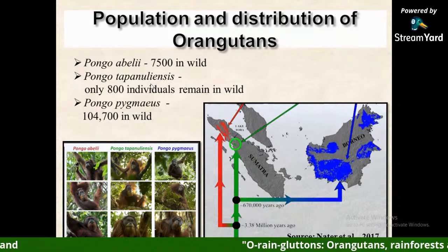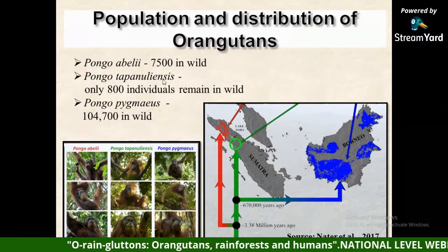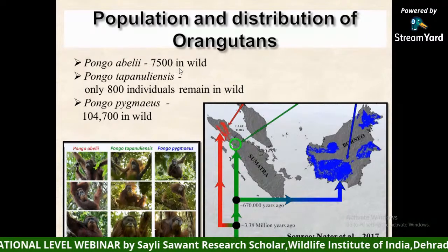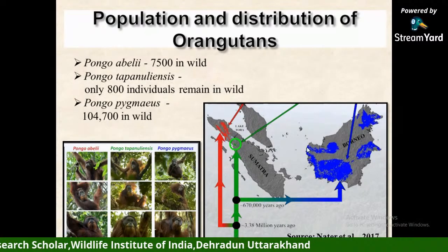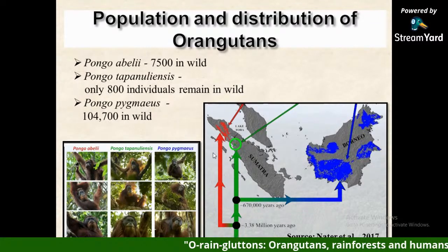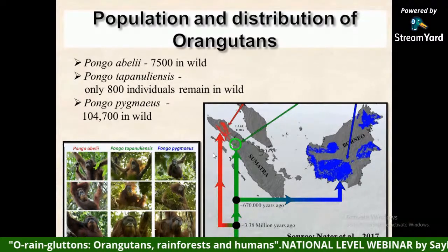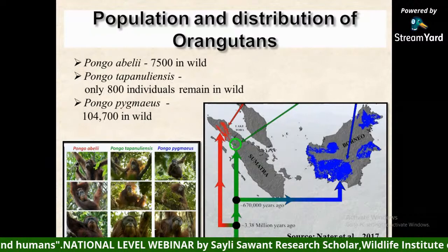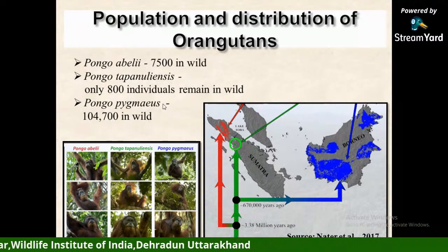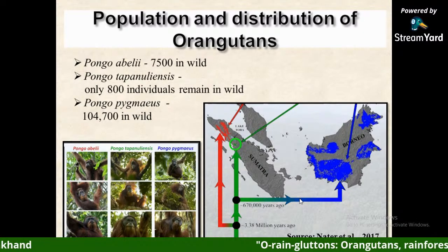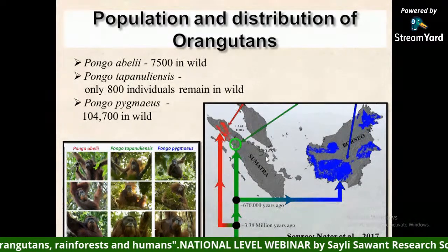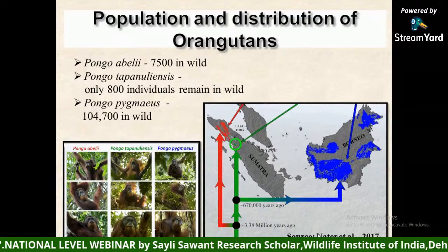The three species are Pongo abelii — the Sumatran orangutan with only 7,500 individuals remaining — Pongo tapanuliensis, with only 800 individuals and critically endangered status, and Pongo pygmaeus, the Bornean orangutan. Pongo tapanuliensis is the newest species of ape, recorded in 2017 by Nater et al., showing genetic and morphological differences from the other two but more closely related to the Bornean orangutan.